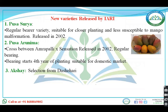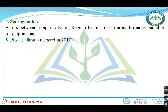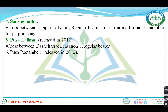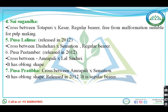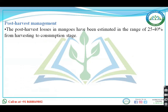New varieties released by IARI: Pusa Surya — regular variety, suitable for close planting, less susceptible to mango malformation. Pusa Arunima — released in 2002. Akshay — selection from Dasehari. Sai Sugandha — also a hybrid. Pusa Lalima — cross between Dasehari and Sehsan. Pusa Pitambar — cross between Amrapali and Lal Sindhu. Pusa Pratibha — cross between Amrapali and Sehsan. Pusa Surya — cross between Amrapali and Sehsan. Recently developed varieties were released in 2012.